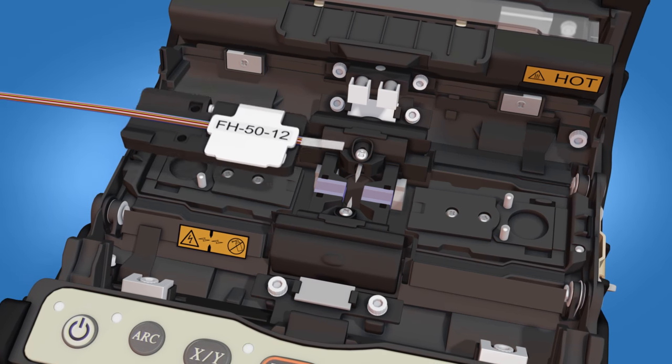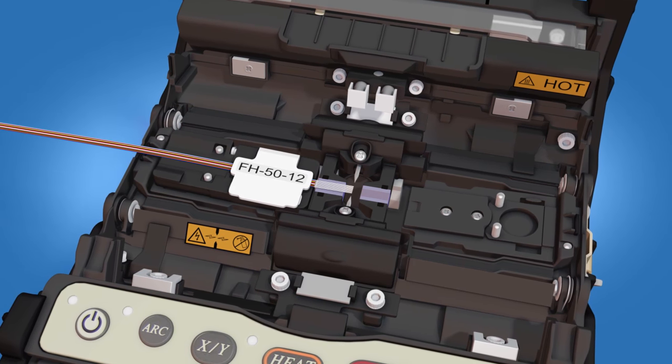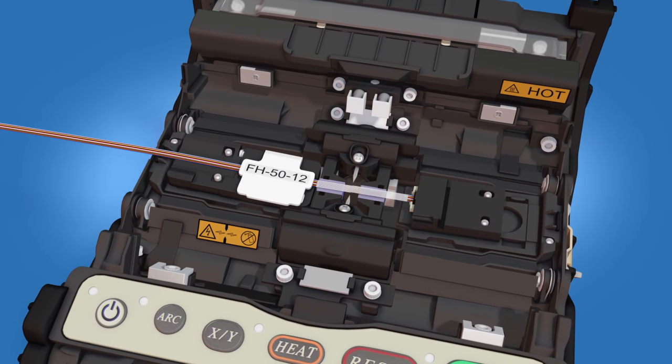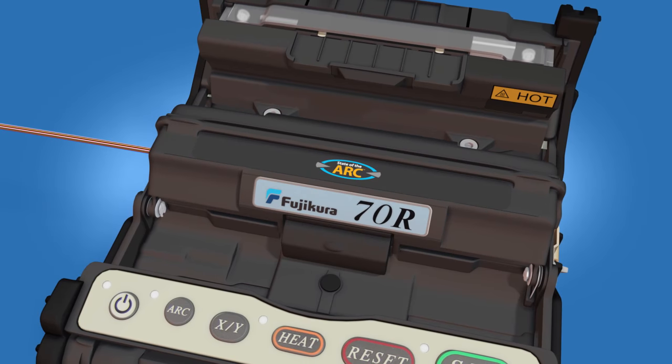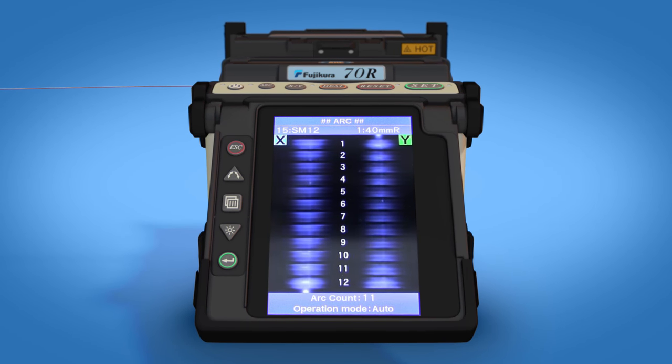Load the fiber holder onto the left side of the splicer. Load the connector holder onto the right side of the splicer and close the cover. Splice on the Fuse Connect MPO.